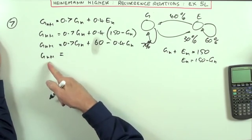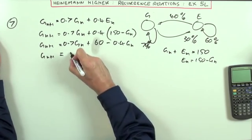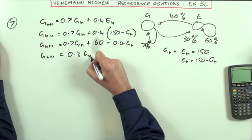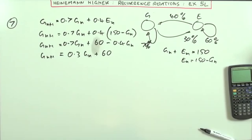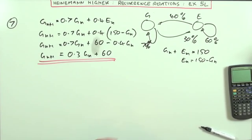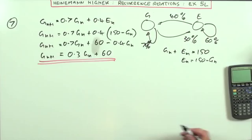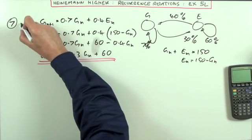I've got it finally. The number you should have in Glasgow the following week should be 0.3 times what they started with, plus 60. There's the recurrence relation for the number of cars that you'll have sitting here in the Glasgow depot. That was part A.